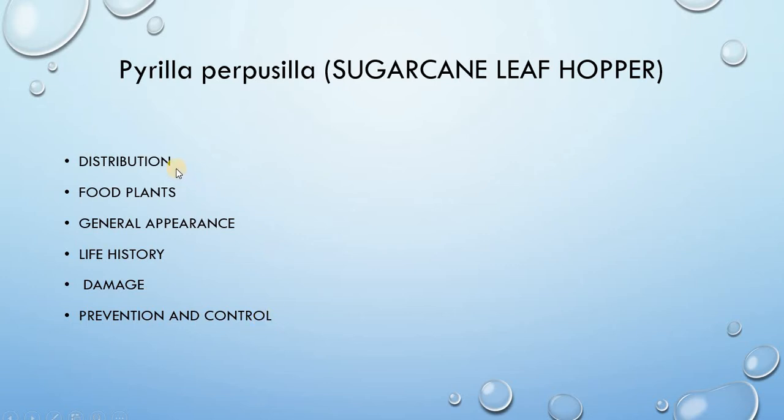First of all, the distribution. The sugarcane leafhopper is commonly distributed throughout India. The great loss due to this pest has been recorded from UP, Madhya Pradesh and Maharashtra. In Uttar Pradesh, this pest causes severe damage in Meerut, Muzaffarnagar and Saharanpur districts.